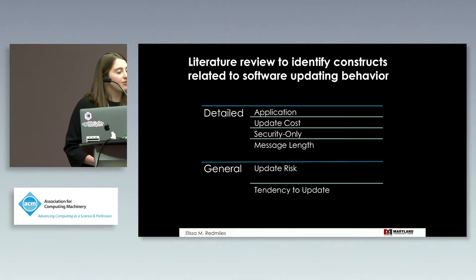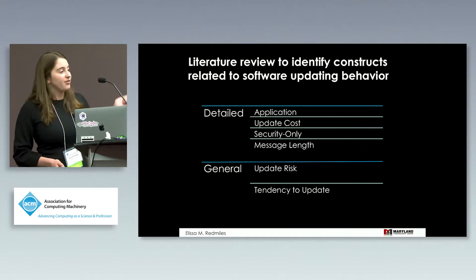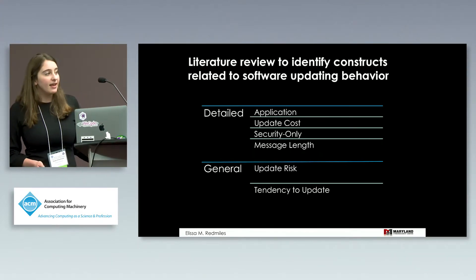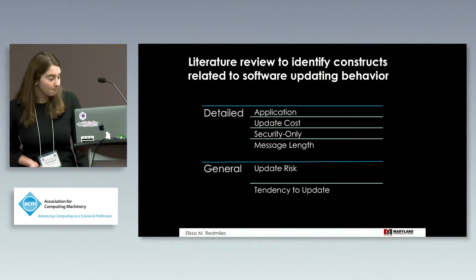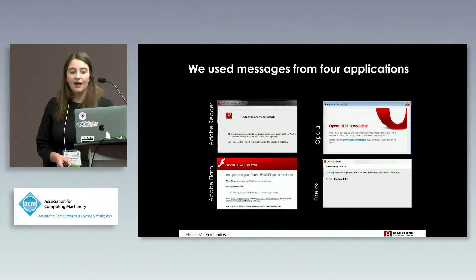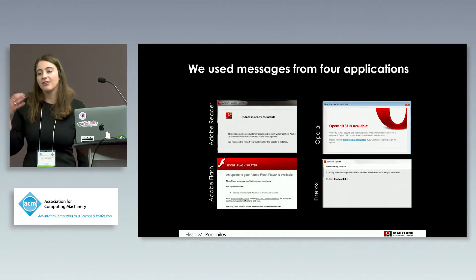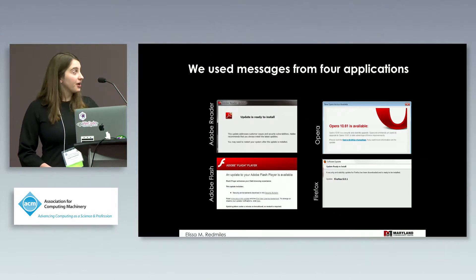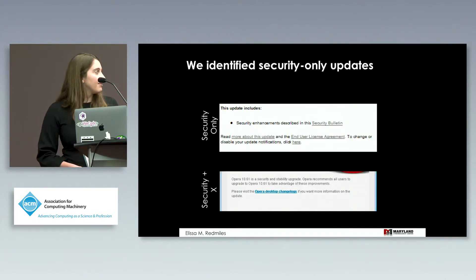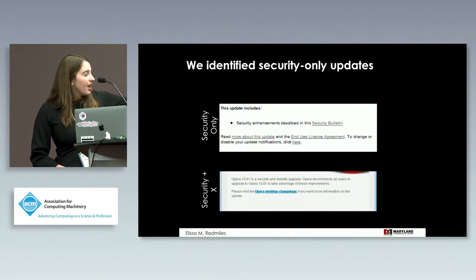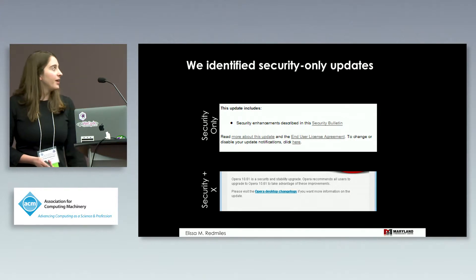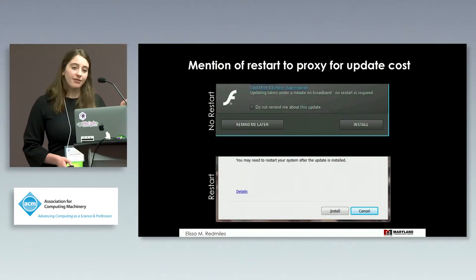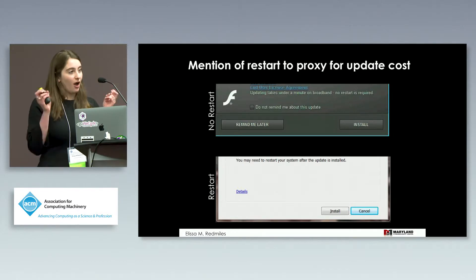People's general tendency to update also appeared to have an effect in prior work. We wanted to see whether, in the log data, we could replicate findings from prior work, which of these factors matter, and whether the survey data would replicate the same factors with the same level and direction of importance. To instantiate these factors, we collected update messages from the log data — messages from four different applications — identifying some as security-only versus security-and-stability or security-and-features, and labeling whether they mentioned restarts as a proxy for update cost.